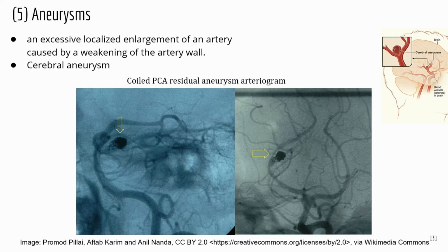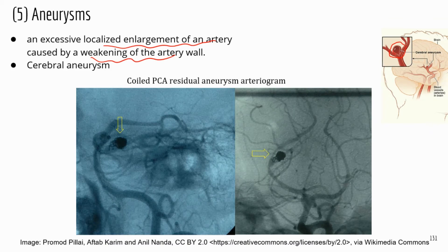Aneurysm is an abnormal enlargement of an artery caused by weakening of the arterial wall. The weakened wall creates a balloon-like section of the artery. As blood flows through carrying pressure, it expands that weakened wall like a balloon, making it very susceptible to rupture. If the blood vessel ruptures, that's going to lead to a stroke.